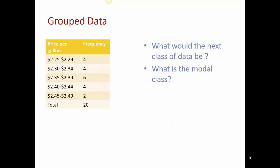So what would be the next class of data? So if I'm looking at this and I wanted to add more data, if I had some gas that was more expensive, what would it be? And then what is the modal class? So the next set of data, if I continued this chart, would start at 250 and go to 254. So there's maintaining that space between them of 4 cents. And then the modal class we said was 235 to 239.